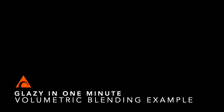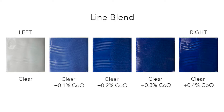In my last video I showed you the concepts of volumetric blending. Today I'm going to show you a practical example. In this diagram you can see the results of a line blend between a clear glaze and a clear glaze plus cobalt oxide. Today I'm going to do a similar line blend test, but instead of cobalt oxide I'll use a mason stain.